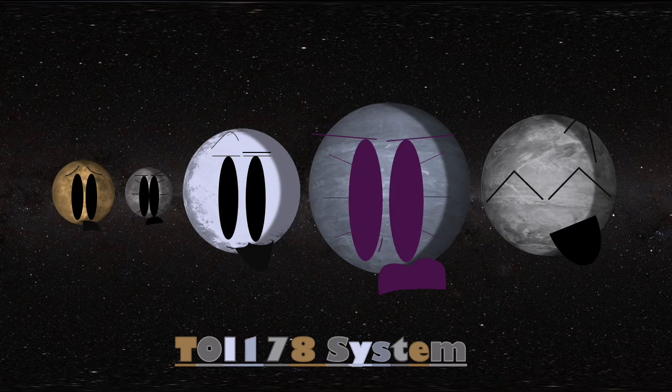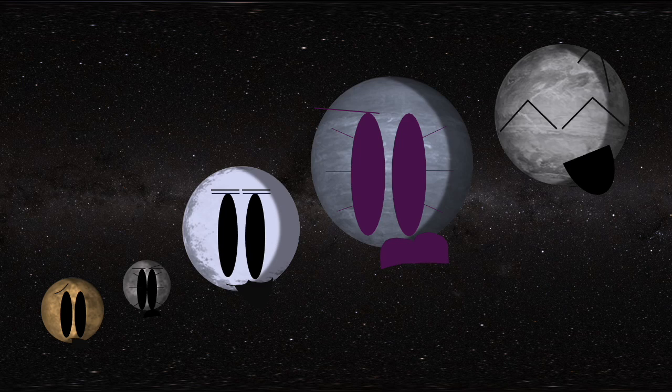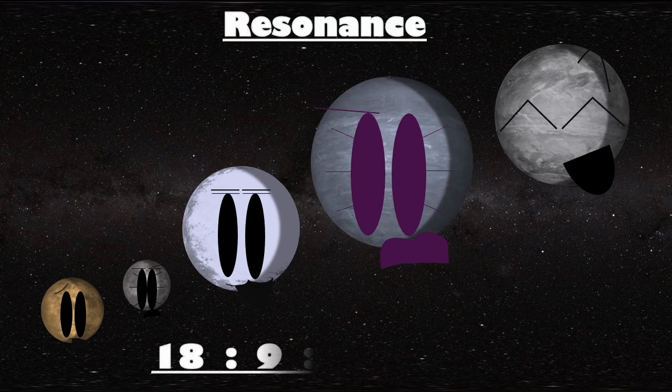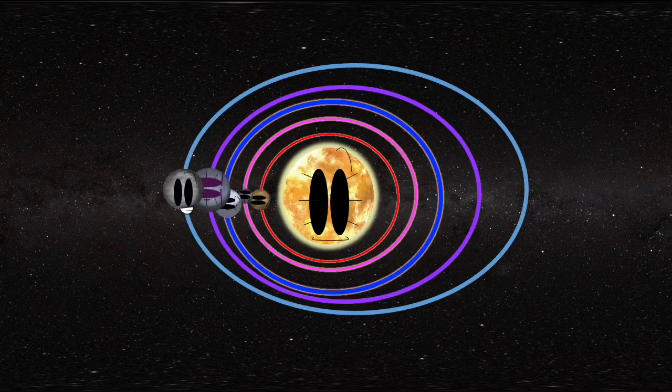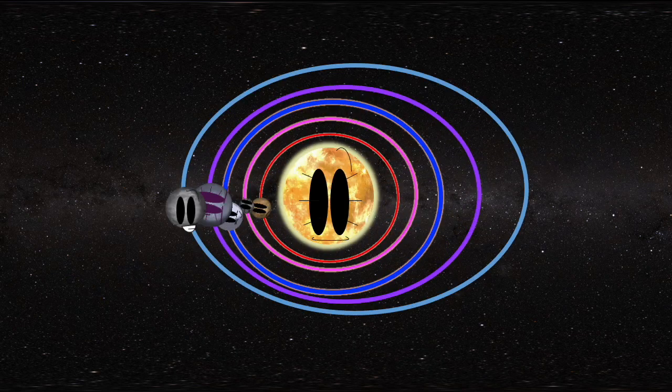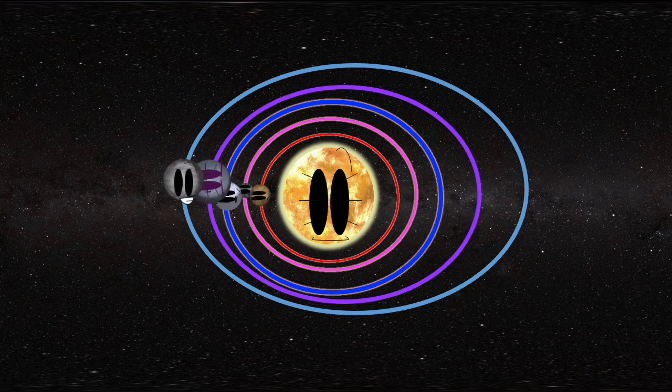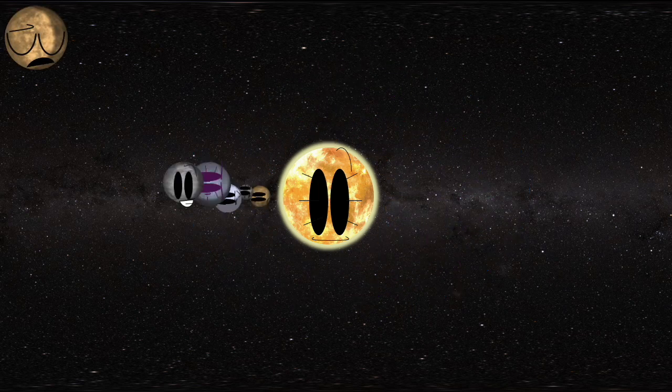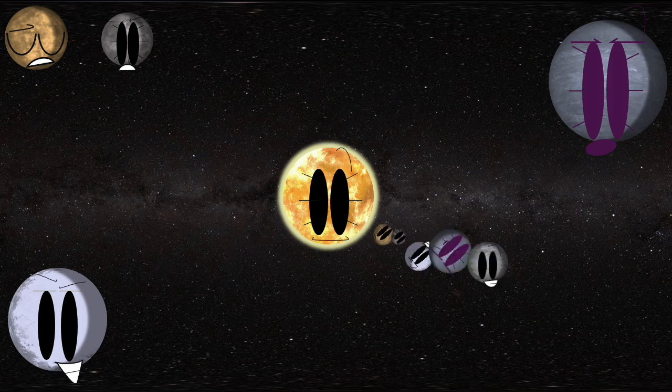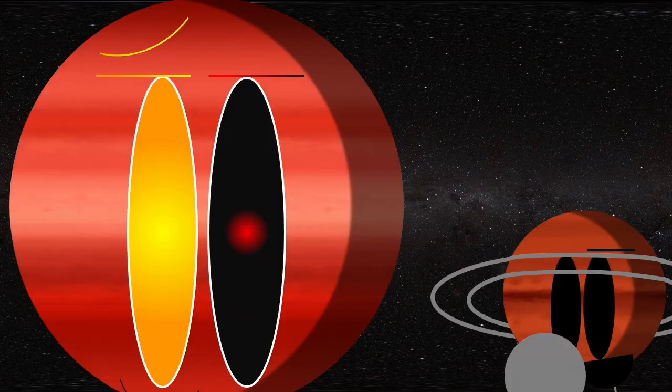The TOI-178 system. We move in almost perfect harmony. The outer 5 of our 6 planets exist in a resonance of 18 to 9 to 6 to 4 to 3. This means we orbit our orange star and line up with each other very regularly. For every 18 orbits I have, I have 9, I have 6, I have 4, I have 3.